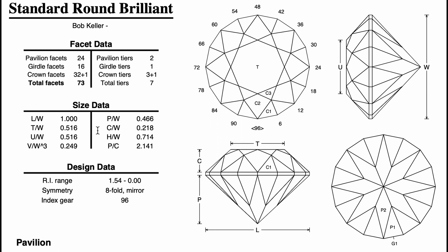The ratios allow the faceter to calculate dimensions they should be getting and what to expect as they're cutting. If you cut your pavilion and wind up with a 10mm stone on a standard round brilliant design, then you can use the crown to width ratio to calculate your crown height. If we take this example design by Bob Keller, the crown should be 10 times 0.218 or 2.18mm. If you only have 1.5mm of room left, then you're going to have to cut a smaller stone.